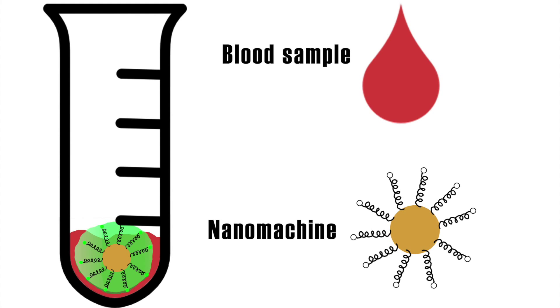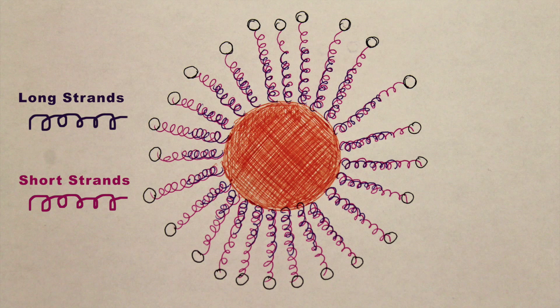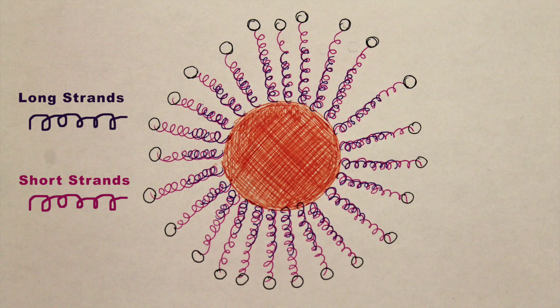How does this work? Short and long strands of DNA are attached to the gold nanoparticle. The long DNA strands contain the biomarkers of the specific disease being tested for. The short DNA strands carry fluorescent signal reporters.